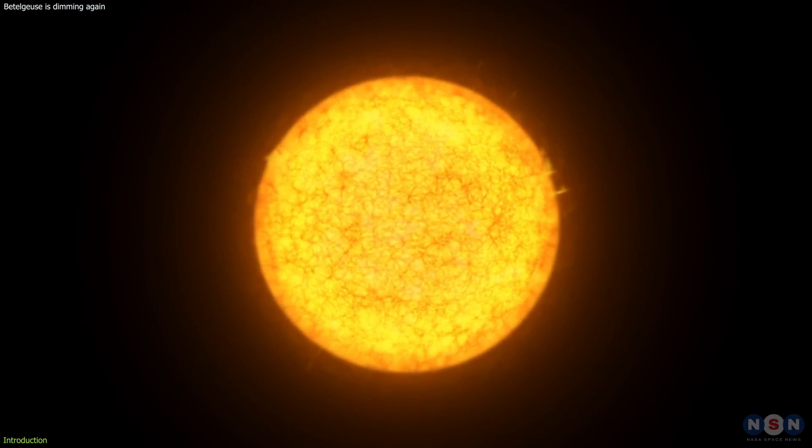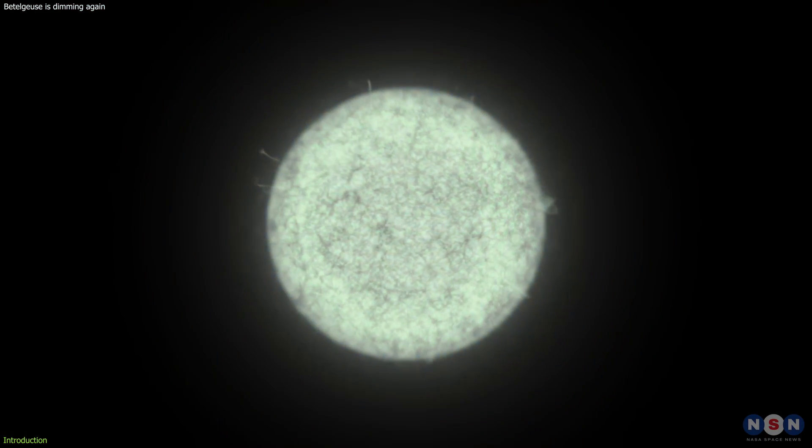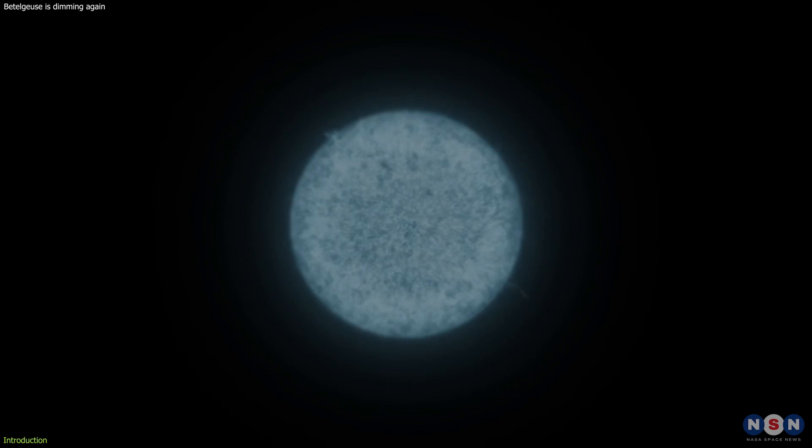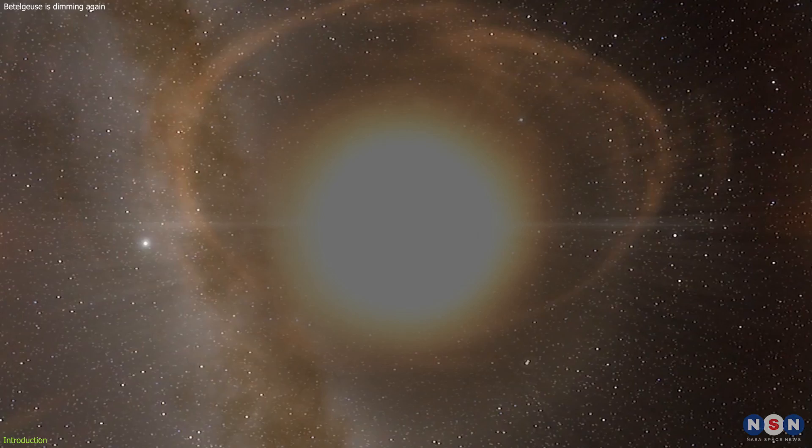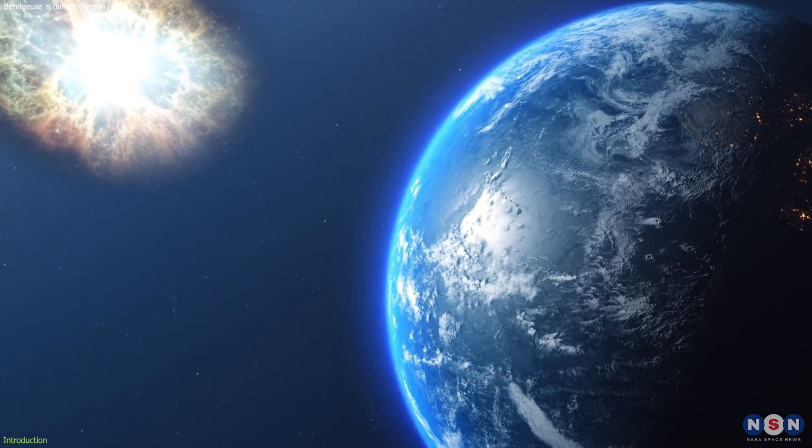Betelgeuse, a colossal red supergiant star, is exhibiting intriguing behavior that has caught the attention of astronomers worldwide. Its recent dimming has sparked discussions about its potential supernova explosion, a cosmic event that would be visible from Earth.